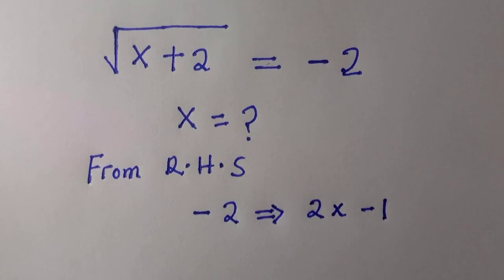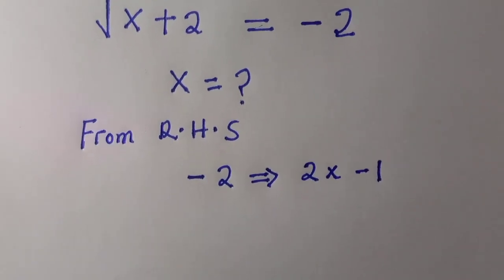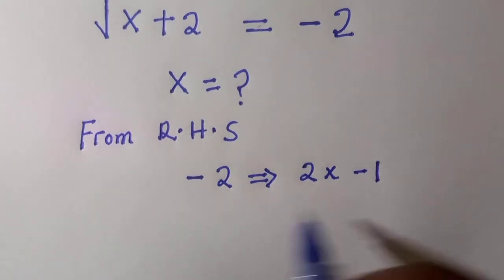So here we have negative 2, which we can write as 2 multiplied by minus 1.